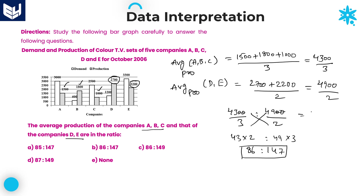These are fractional ratios. To convert fractional ratios to normal ratios, multiply by the LCM of the denominators. LCM of 2 and 3 is 6, so multiply the first value by 2 and the second by 3. The ratio is 86 : 147. Option B is the right answer.